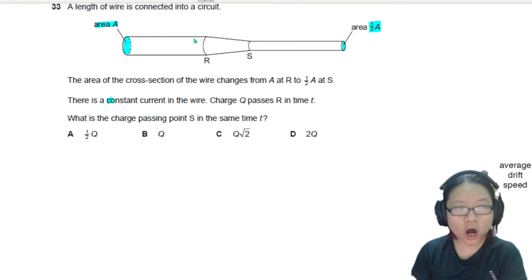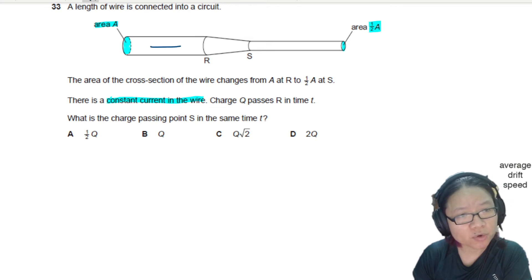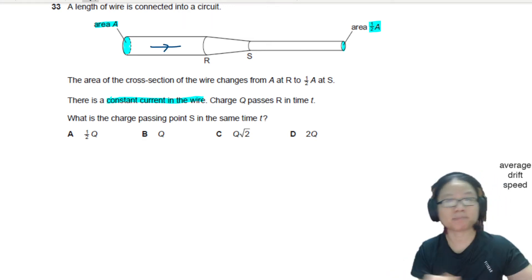There is constant current in the wire, so very helpful they remind you I is the same. This tells me that the current flowing inside the wire, let's say the current is flowing from left to right...